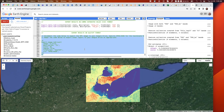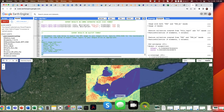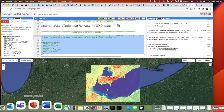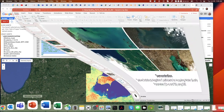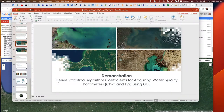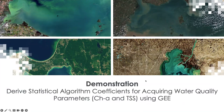This concludes the demonstration. This has been the demonstration on deriving statistical algorithm coefficients for acquiring water quality parameters — both chlorophyll-A and total suspended solids — using Google Earth Engine. I'll now turn it back over to Dr. Amita Mekta.